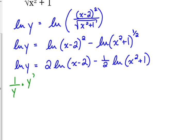So the left side is 1 over y times y prime equals - the 2 stays - we've got 1 over x minus 2. Just for the sake of being clear, I'm going to multiply that by 1 because that's the derivative of x minus 2, minus 1 half times 1 over x squared plus 1 times 2x because that's the derivative of x squared plus 1.